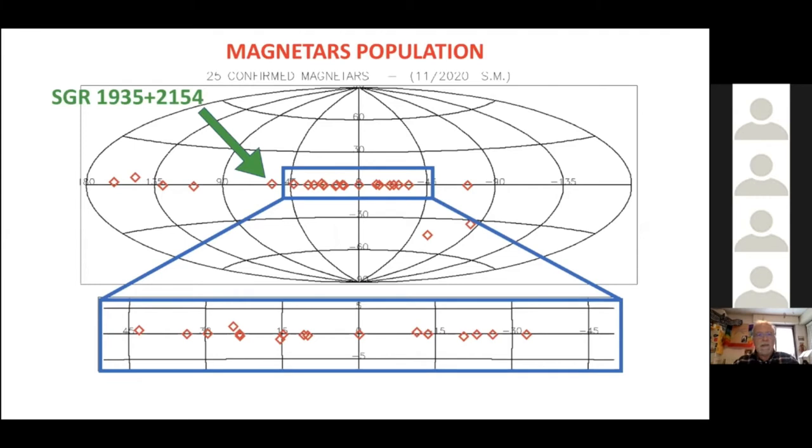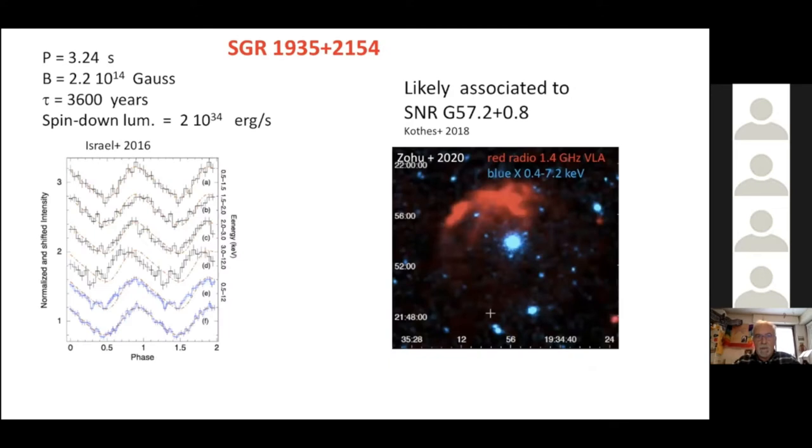So SGR 1935 is a magnetar, is a rather well known magnetar in our galaxy. You see its position in this map. It is in the galactic plane toward the galactic bulge. It is a rather normal magnetar. It has a spin period of about three seconds. You see the light curves that show you the modulation due to the neutron star rotation in this plot. As it happens for many galactic magnetars, it is very likely associated to a supernova remnant. And you see the radio and X-ray images of the supernova remnant in this plot.